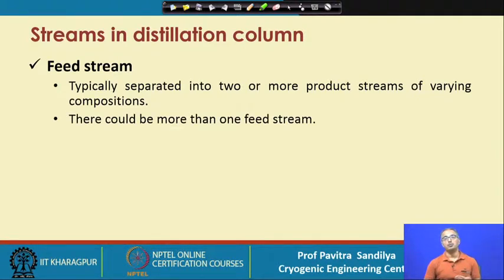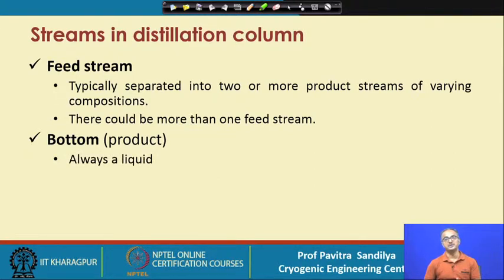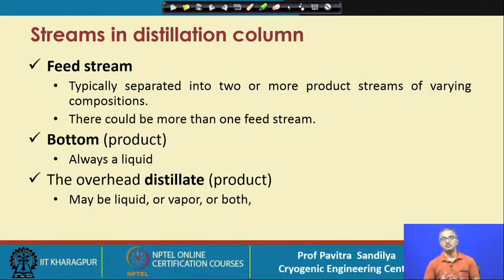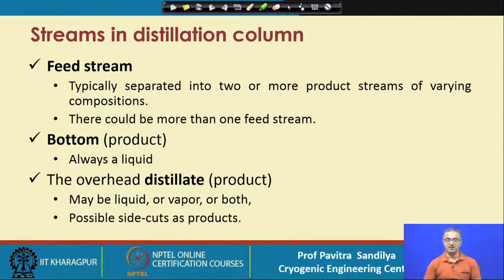There could be more than one feed stream in a column. We have a bottom product, which will generally always be liquid and will contain the heavier components in the mixture. Then we have the overhead distillate product, which will have the lighter components and may be obtained as liquid, vapor, or both. There could also be many side cuts — from various locations of the column we can have several other products, especially true for refineries.